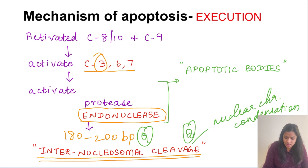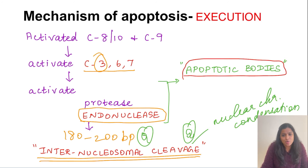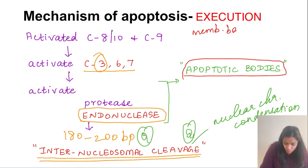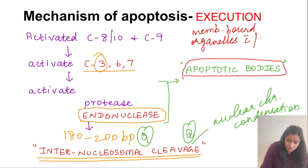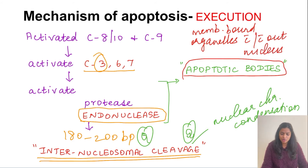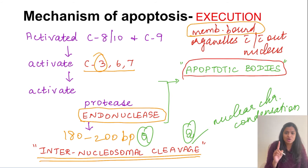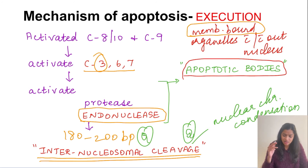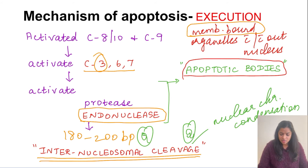When proteases and endonucleases are activated and nucleochromatin condensation is occurring, apoptotic bodies are simultaneously formed. Apoptotic bodies are membrane-bound organelles containing cellular contents with or without a nucleus. The key feature is that the cell membrane is intact, so there is no associated inflammation — which is the opposite of necrosis.